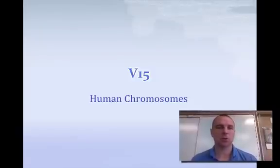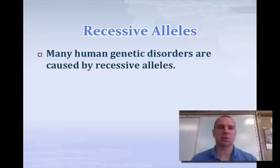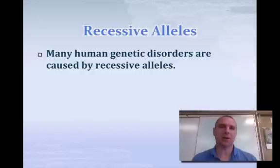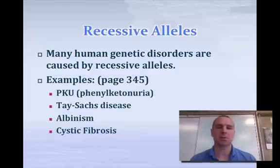Welcome to video 15 — we're going to deal with human chromosomes. When we talk about human chromosomes and how traits are passed from one parent to the next, recessive alleles play a major role. Many human genetic disorders are caused by recessive alleles, which means most of us have to get the bad trait from both mom and dad for it to appear. Some examples of traits caused by recessive alleles are PKU (phenylketonuria), Tay-Sachs disease, albinism, and cystic fibrosis.